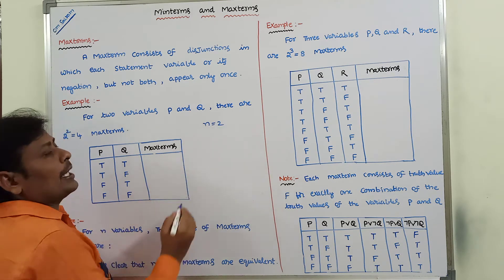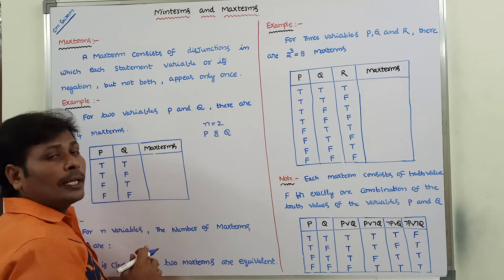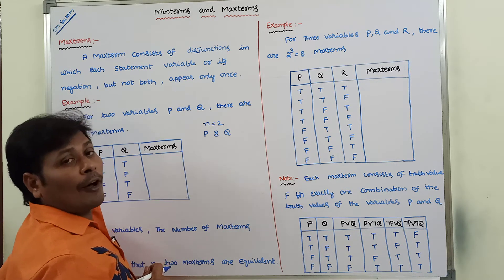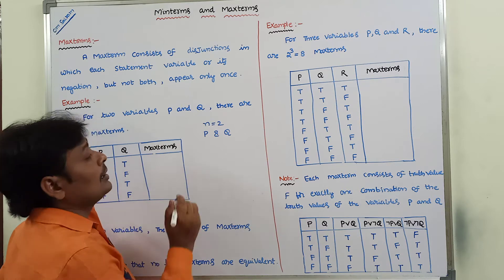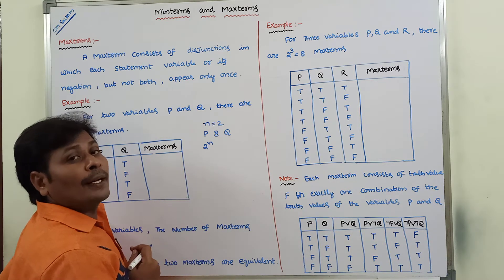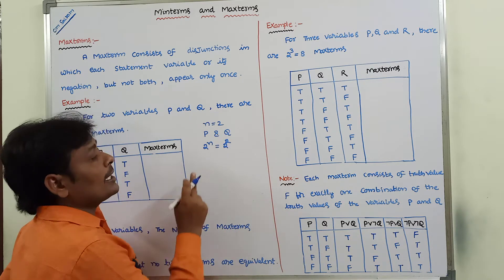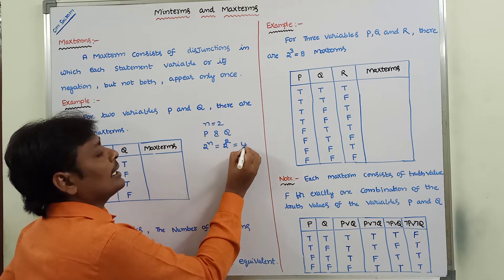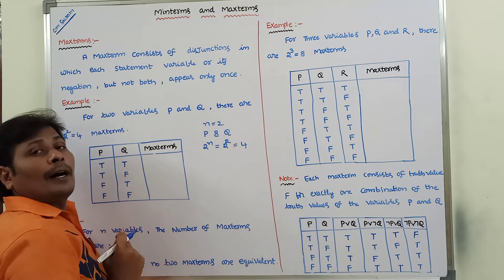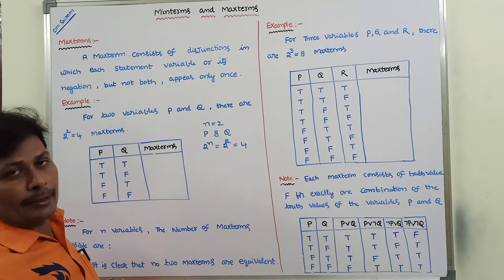Suppose we consider n is equal to 2 statement variables, that are p and q. So p and q are the two statement variables, n is equal to 2. How many max terms are possible? That is 2 power n number of max terms are possible, where n is the number of statement variables. Here n is equal to 2, so 2 power 2 equals 4. So 4 max terms are possible.